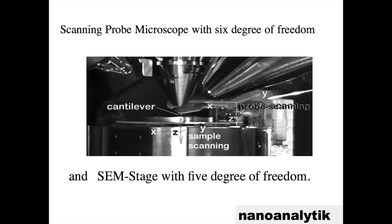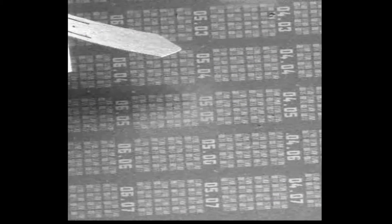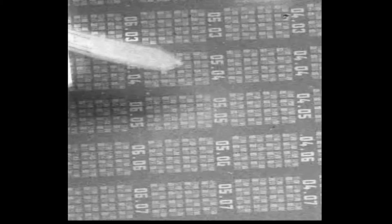In this slide we can monitor the position of the AFM and SEM system after introducing it into the SEM chamber. Due to the realization of six degrees of freedom in the system we are capable of addressing the scanning tip over the surface of 18 by 18 millimeters over the sample and take measurements up to a height of 8 millimeters.